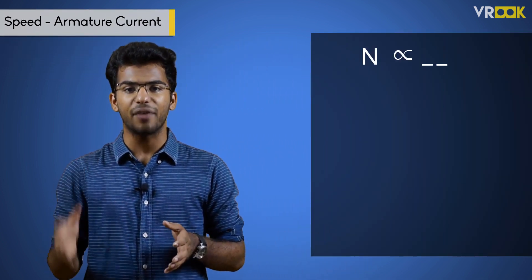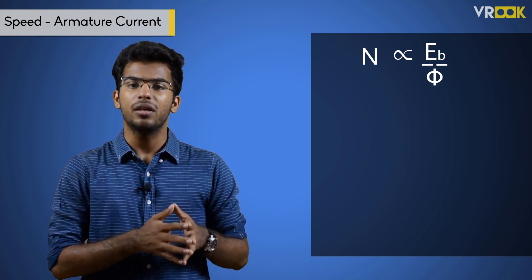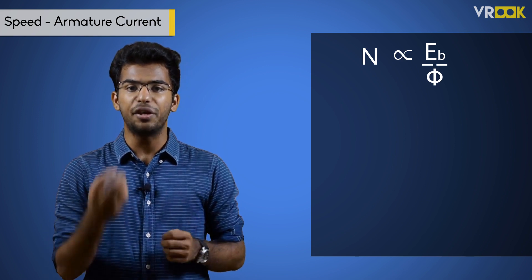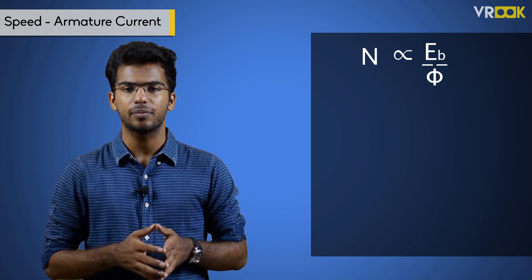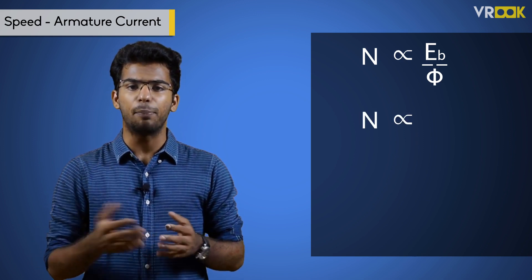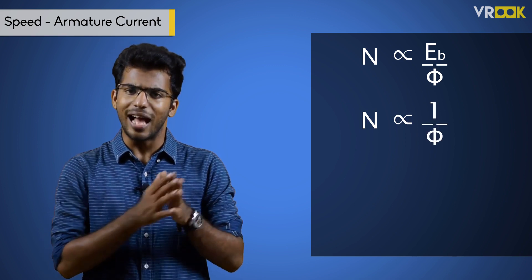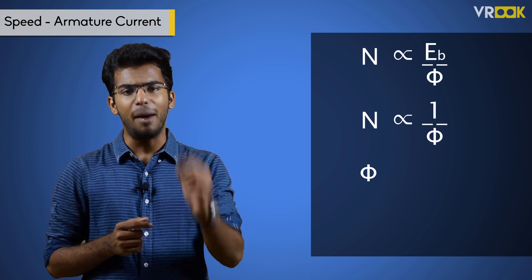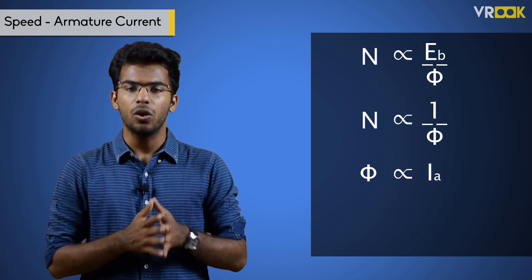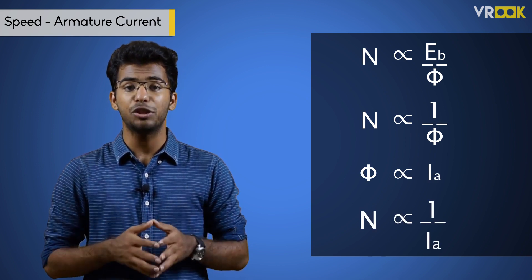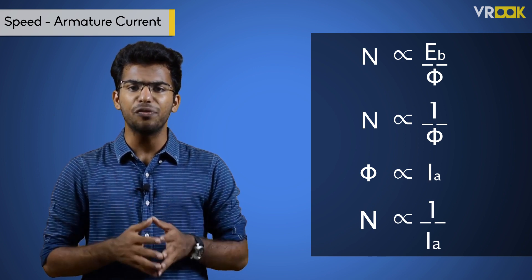That covers the torque-current characteristics of a series motor. Now let's move on to speed-armature current characteristics. The speed n is proportional to Eb/φ, that is back EMF divided by flux. Since the variation of back EMF is very small for different loads, it can be treated as a constant. Therefore, speed is inversely proportional to magnetic flux. Since flux is dependent on armature current in a series motor, speed will be inversely proportional to armature current. As armature current increases, the speed of the motor decreases, as shown in the graph.